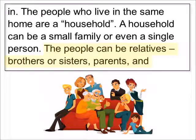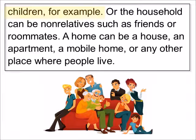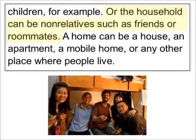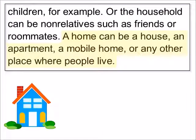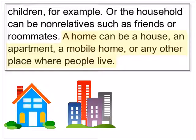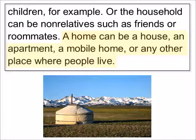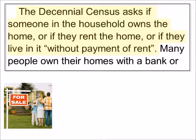The people can be relatives — brothers or sisters, parents and children, for example. Or the household can be non-relatives, such as friends or roommates. A home can be a house, an apartment, a mobile home, or any other place where people live.